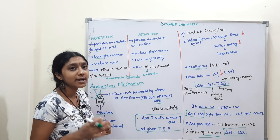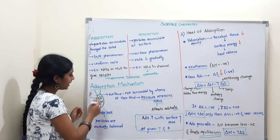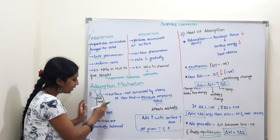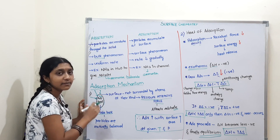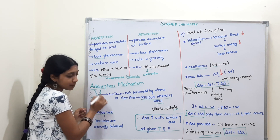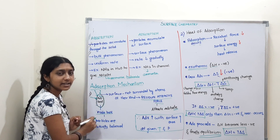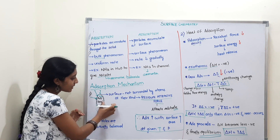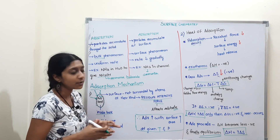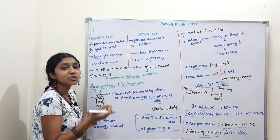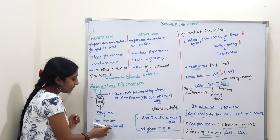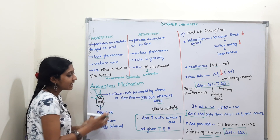Next is the adsorption mechanism. There are two points. First, consider the adsorbent. Inside the bulk of the adsorbent, particles are mutually balanced — one particle and another particle exert balanced forces on each other. However, particles on the surface are not surrounded on all sides, so they have a residual attractive force. Because of this residual attractive force, the surface can adsorb particles onto it.